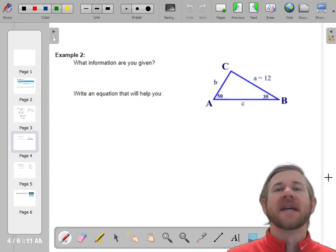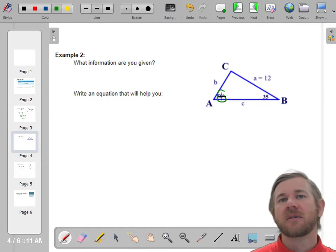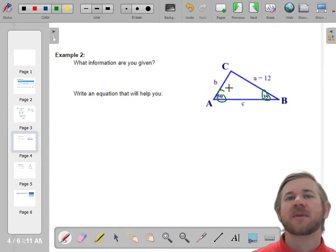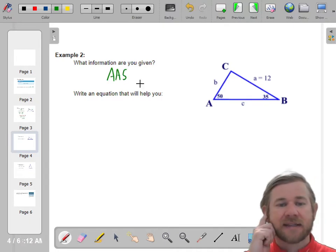Let's try another one. So it says, what information are you given? Well, let's see. We have an angle. We don't know either of these. Then the next thing we know is an angle. And then we know a side. So this would be angle, angle, side.